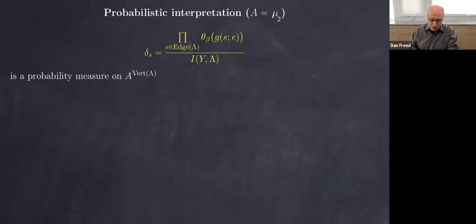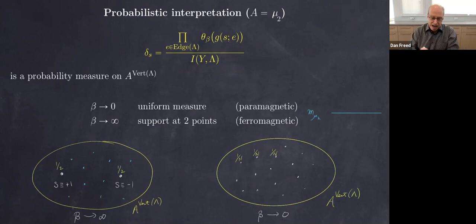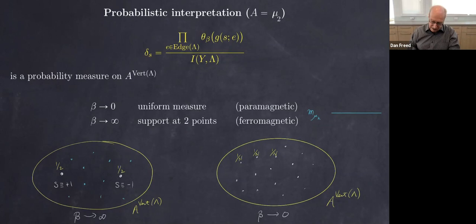This probabilistic interpretation works well because the set of configurations is finite — we get positive numbers adding to one, so a probability measure for each beta. For the cyclic group of order two (classical case), at low temperature as beta goes to infinity, the measure becomes supported at the two constant functions: spin the constant function plus one or constant function minus one — all spins up or all spins down. If we let beta go to zero, the measure tends toward the uniform measure.